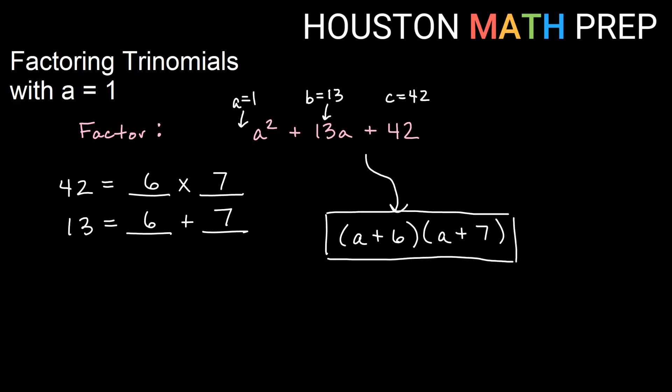If any of this is a bit much and seems a little confusing, you can always factor these by grouping all the way. You will still get these same answers. Again, this is just a shortcut that can help you save some time when a equals 1 and you're factoring trinomials. All right, give this a try on some of your problems. We hope it helps you out. Good luck.